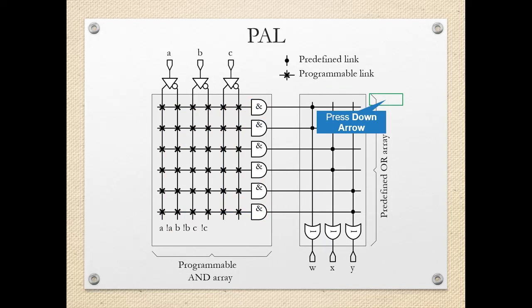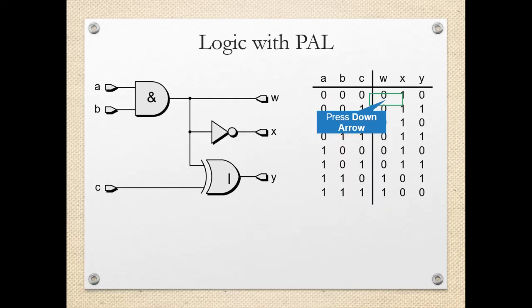Now, this is PAL. In PAL, we have a Programmable AND array and a predefined OR array. This functionality is exactly the reverse of PLA. In PLA, the AND array is predefined and OR is programmable, whereas in PAL, the AND array is programmable and the OR array is fixed. So in the programmable AND array, we can implement different functions, but the ORing operation available is fixed.